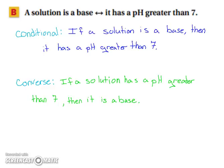The bi-conditional stated: a solution is a base if and only if it has a pH greater than 7. The conditional would be: if a solution is a base, then it has a pH greater than 7. The converse would be: if a solution has a pH greater than 7, then it is a base.